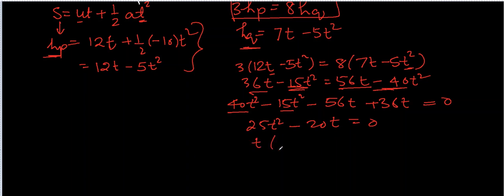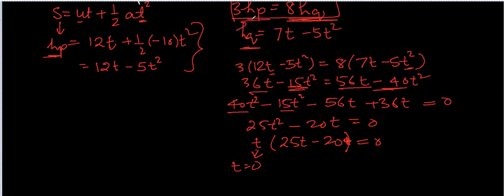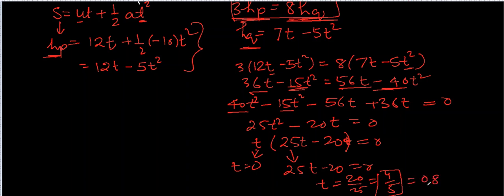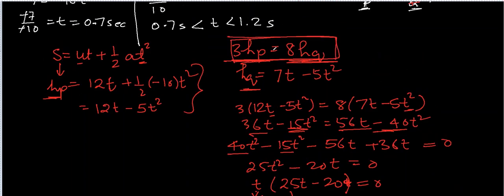This is a quadratic equation — taking T as a common factor: T(25T − 20) = 0. So T = 0 or 25T = 20, giving T = 20/25 = 4/5 = 0.8 seconds. T = 0 makes sense trivially since both heights are zero at launch. The meaningful solution is T = 0.8 seconds — this is when 3HP = 8HQ.